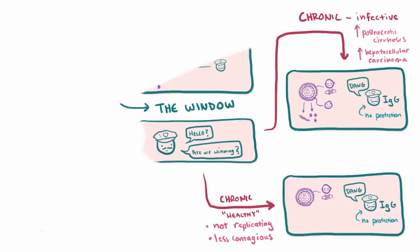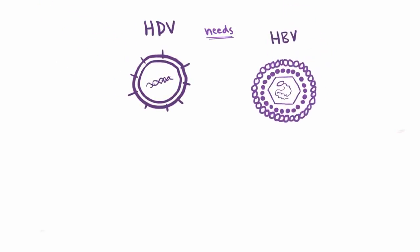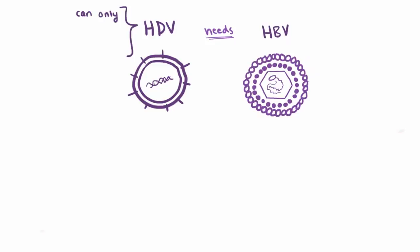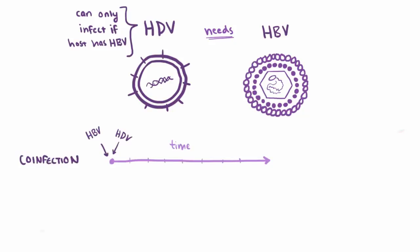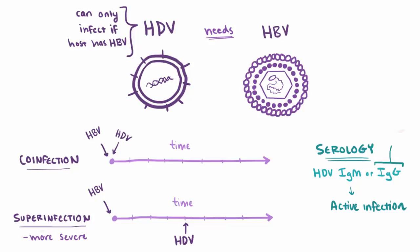Hepatitis D virus is unique in that it needs HBV, meaning it can only infect a host if that host also has HBV. If it infects at the same time, it's called co-infection. If it infects some time later, it's called superinfection, which is considered to be more severe than co-infection. If either the IgM or IgG antibody are present, that indicates an active infection — so in this case the IgG is not a protective antibody.